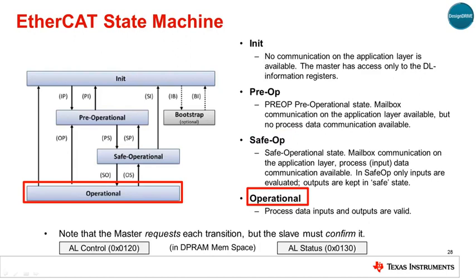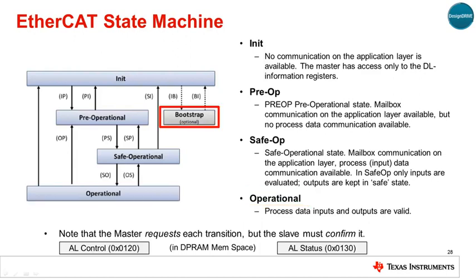In the operational state, all process data inputs and outputs are valid — in a factory, the machine would now be fully operational. A fifth state, bootstrap, is optional but is recommended if firmware updates are necessary. Note that in operation, the EtherCAT master requests each transition, but the slave must confirm it. These current transactions are reflected in the AL control and status registers, respectively.